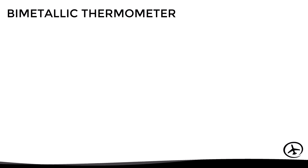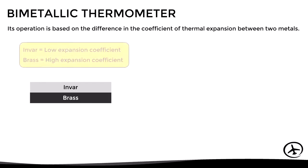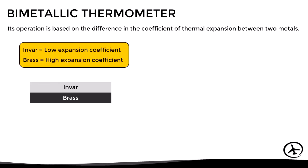Let's start with the bimetallic thermometer. The operation of this type of thermometer is based on the difference in the coefficient of thermal expansion between two metals. Here we have two metal strips: one is made of invar and the other one is made of brass. These metals have different coefficients of thermal expansion — invar has a low coefficient of expansion while brass has a high coefficient of expansion.